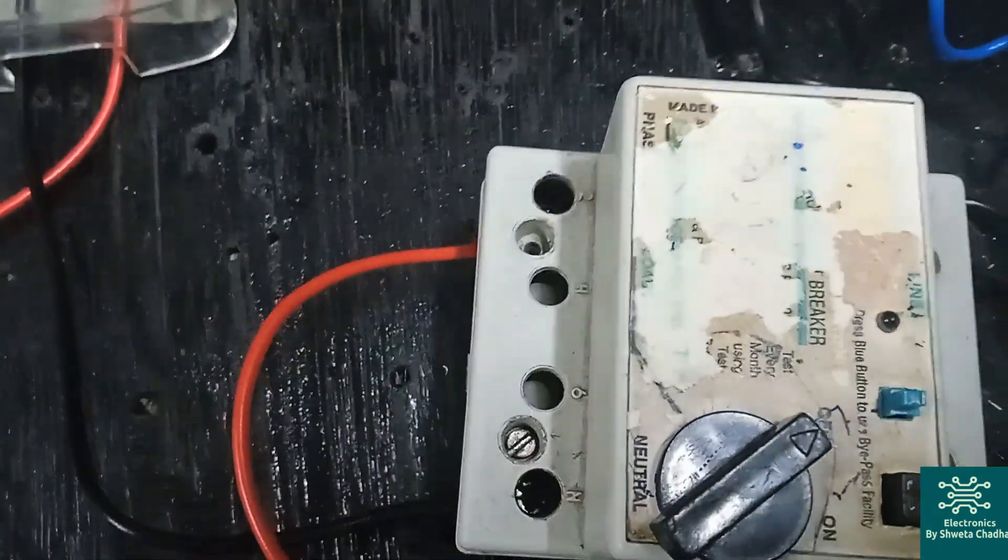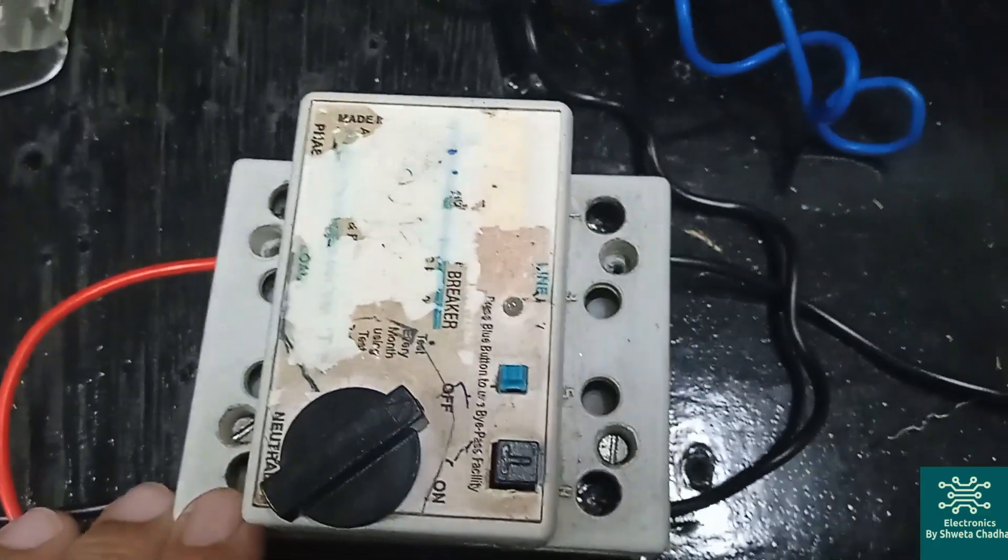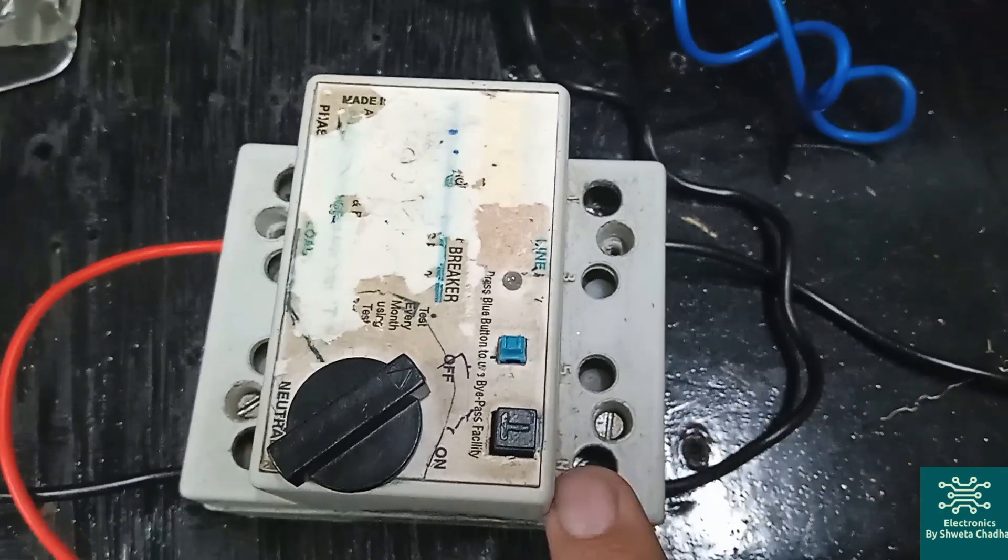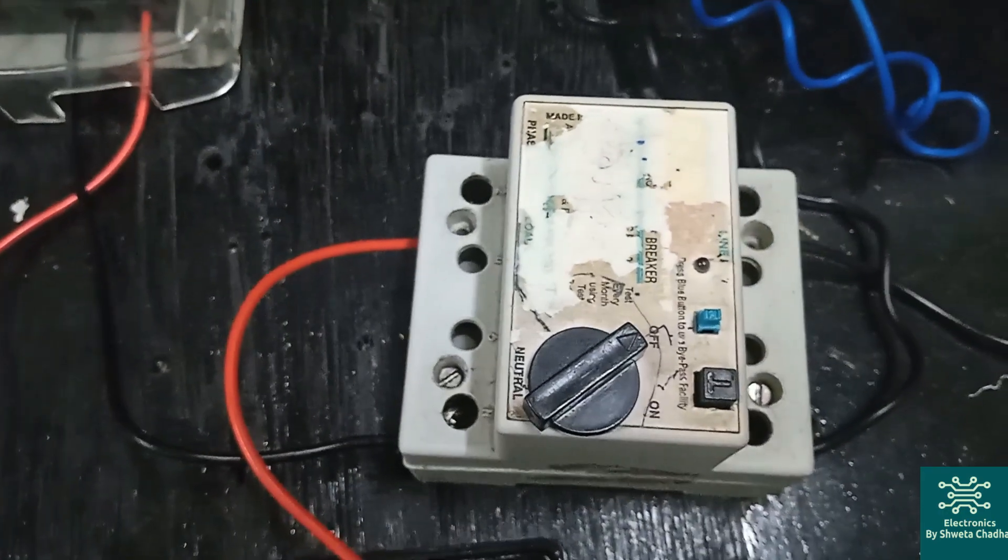First of all, please observe, N is mentioned over here. So here, N. Similarly, over here we have N terminal. So N means that the neutral wire will be connected over here.